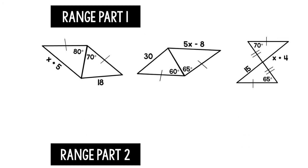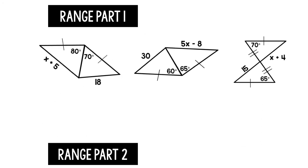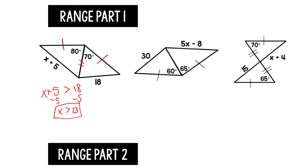Let's flip it over and figure out the range. We've got two triangles with congruent sides and a shared side by the reflexive property. The included angles are 80 degrees and 70 degrees. Since 80 is bigger, the side X plus 5 has to be greater than 18. Solving this inequality gives us X is greater than 13. So we don't know exactly what X is — we just know it's bigger than 13.